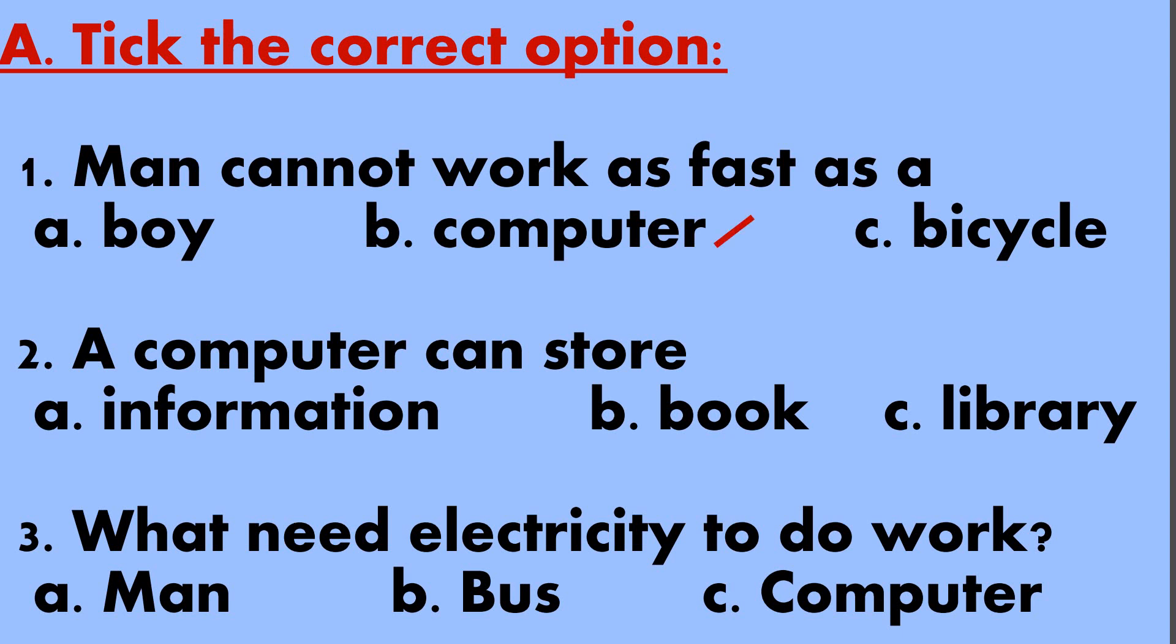Second question. A computer can store information. Option b book. Option c library. And the right option is Option a information.